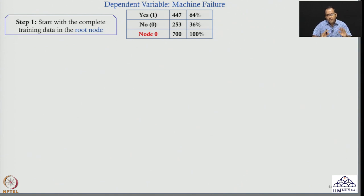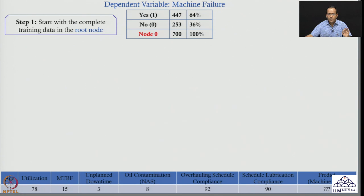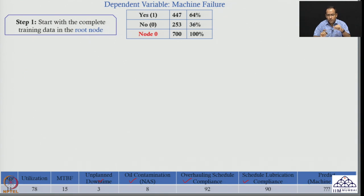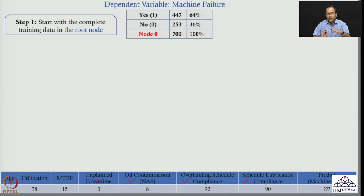Irrespective of a machine's age, utilization, or any other parameter value, if you pick any random machine the probability remains 64 percent. But in reality, the probability of failure depends upon all these factors — age, utilization, unplanned downtime, oil contamination, overhaul scheduling compliance, and scheduled lubrication compliance. The idea is: can I take these parameters into the model and try to predict in a better way? Can I improve the accuracy?